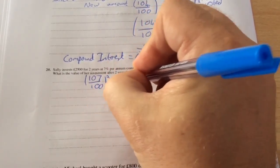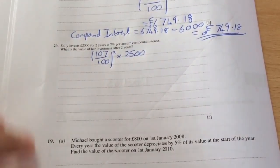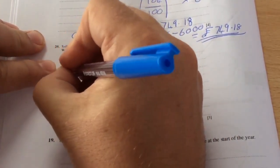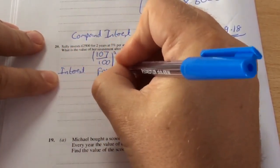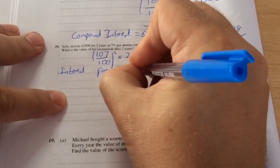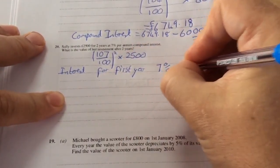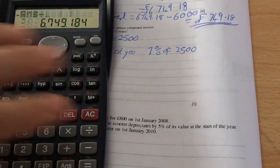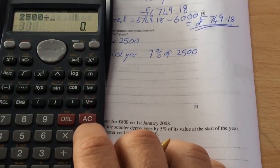Otherwise you can use the long method where the interest for the first year becomes 7% of £2500. So depending how you work out 7% of £2500, you can watch the percentage video for that.